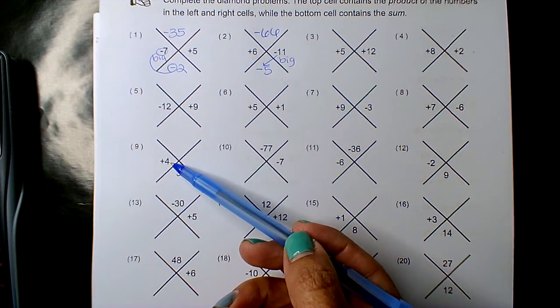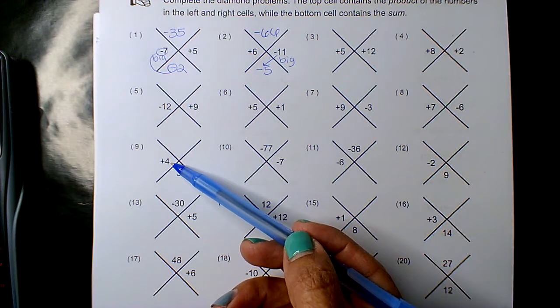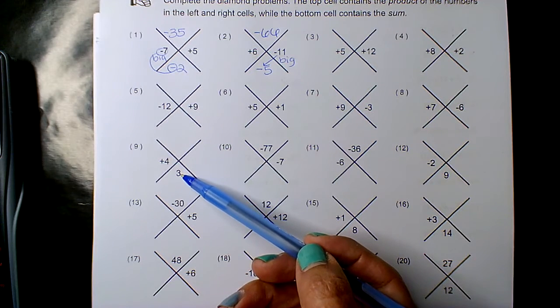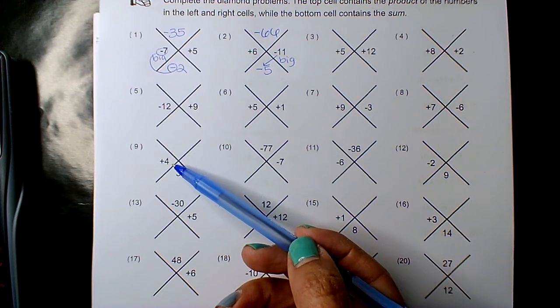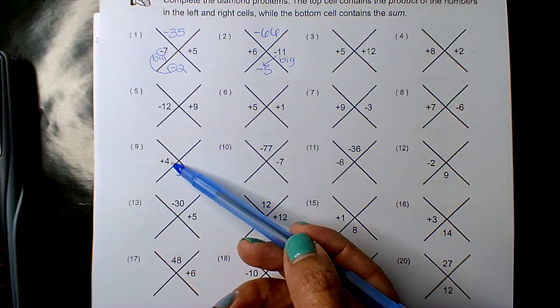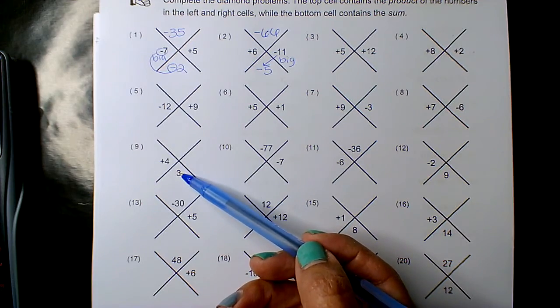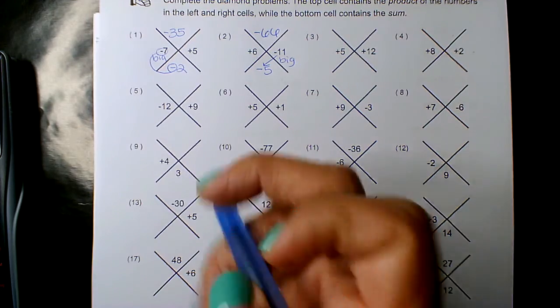Now, see how 4 declined by one unit, right? Isn't 3 less than 4? So how would you take 4 and move it down to 3? Right, negative 1.